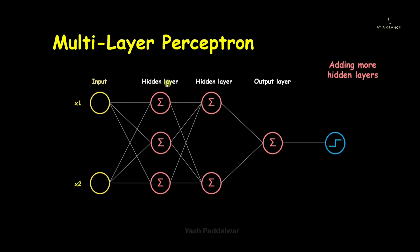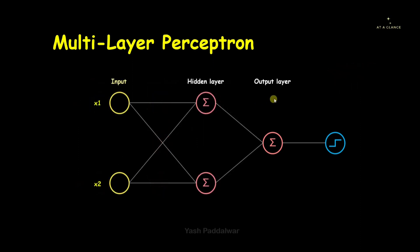Similarly, we can add more hidden layers to the existing architecture. Each hidden layer can have a different number of neurons. There are specific conditions for adding neurons which we'll look into in upcoming videos, and we'll also see how it affects the architecture and the model.